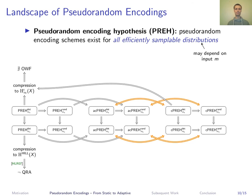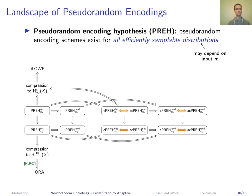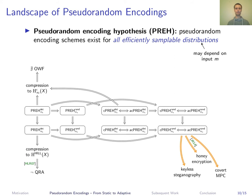By this transformation, we can simplify our PRE landscape. PRE has several applications which follow just from the ability to encode into the uniform distribution and decode again. A very natural example is honey encryption from the motivating example, or password-authenticated key exchange, and also variants of steganography and covert computation. Because of the equivalence between static and adaptive, this is already true for our weakest notion, since adaptivity is necessary there.